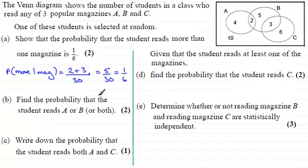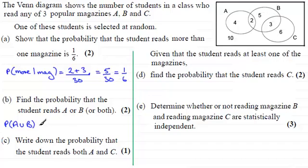In part B we've got to find the probability that the student reads A or B or both. We need to work out the probability of A union B, which represents the probability of A or B or both. We're looking at all the number of students in A and B or in both, so that's going to be four plus two plus five plus three, out of all thirty students. This reduces down to seven out of fifteen.